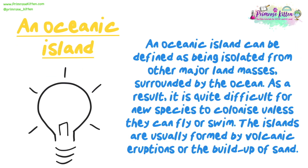An oceanic island can be defined as being isolated from other major land masses, surrounded by the ocean. As a result, it is quite difficult for new species to colonise unless they can fly or swim. The islands are usually formed by volcanic eruptions or the build-up of sand.